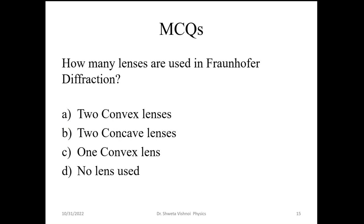How many lenses are used in Fraunhofer diffraction? The options are two convex lenses, two concave lenses, one convex lens, or no lens used. Two convex lenses are used, so option A is correct.